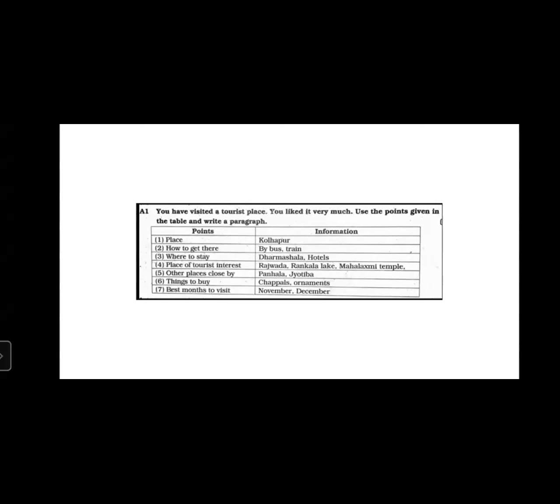The question says: you have visited a tourist place you liked very much — use the points given in the table and write a paragraph. This is also five marks. You have a choice between non-verbal to verbal and verbal to non-verbal — any one. Please don't attempt both questions. It is up to you which one you feel is easier to score full five marks.